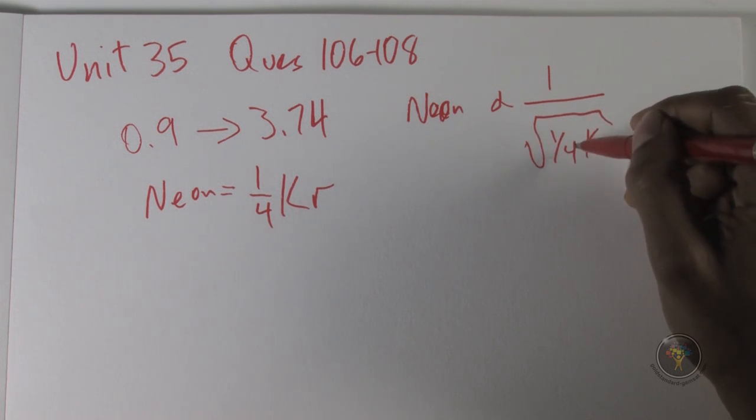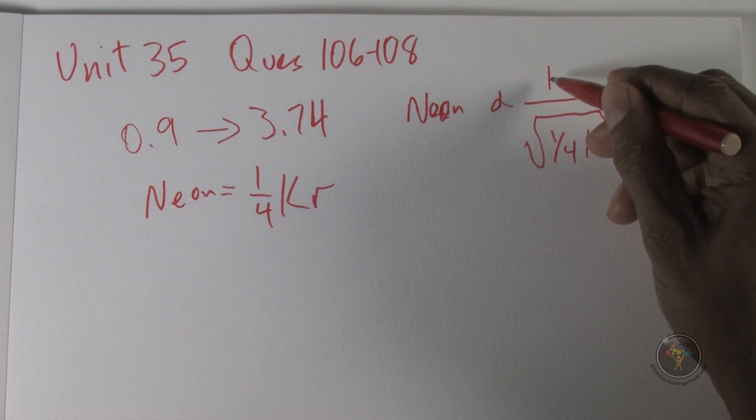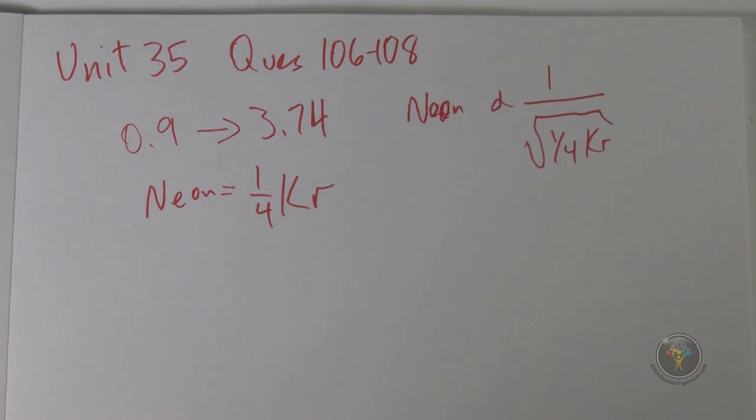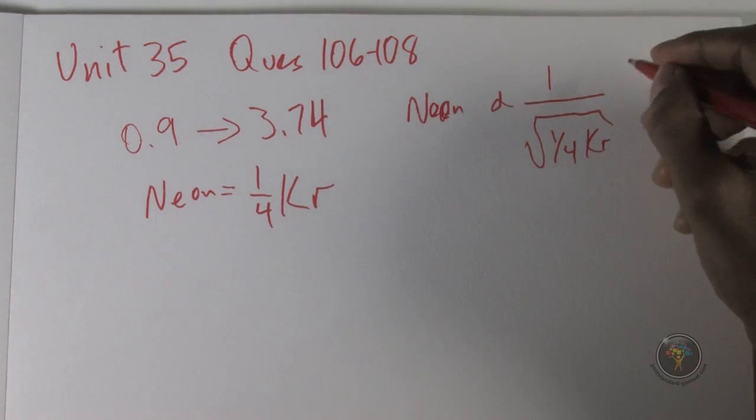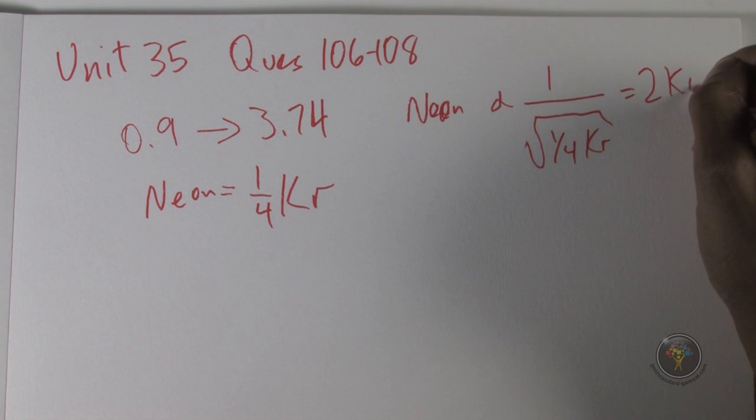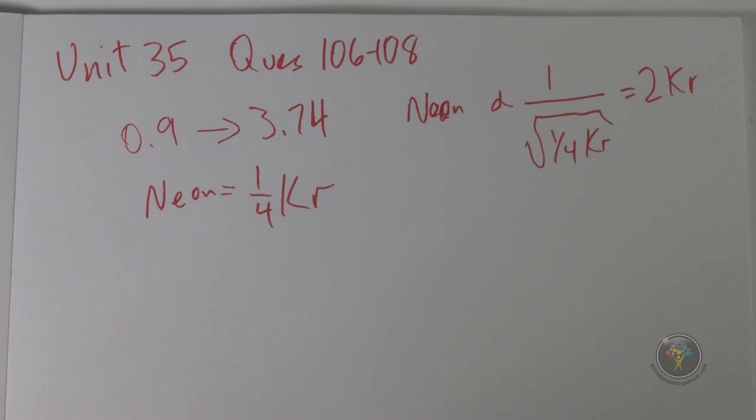So taking the square root of that, you're going to get one half. One half in the denominator, when you have the denominator in the denominator it becomes a numerator, so it ends up getting two times krypton. So this ends up being two times the amount for krypton. Either way, 106, the answer is C.